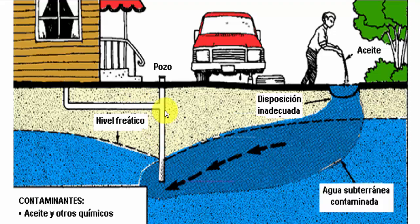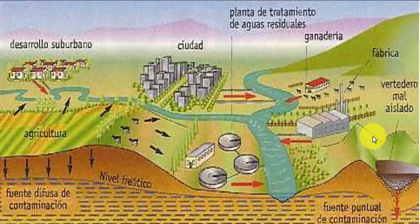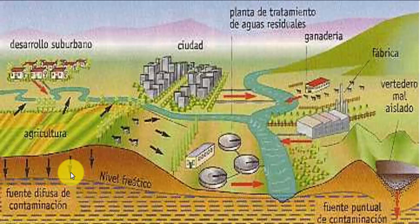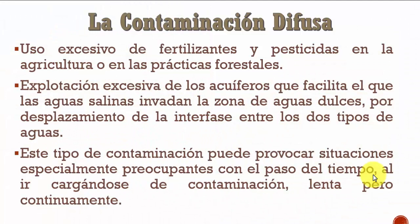El agua contaminada se utiliza para el abastecimiento humano. Con relación a todas las actividades humanas interconectadas con la superficie, todas esas estructuras y nuestro modo de vida pueden contaminar las aguas subterráneas, que son las aguas que nos dan vida y permiten que tengamos desarrollo. Hay que cuidarlas. Este es el primer tipo de contaminación: la contaminación localizada, focalizada y puntual.